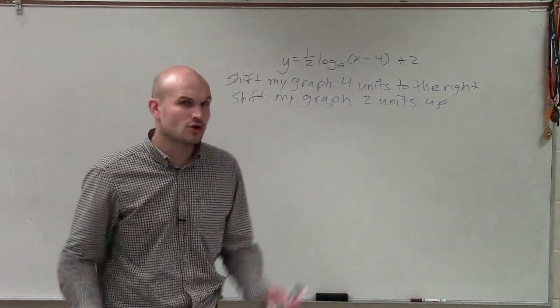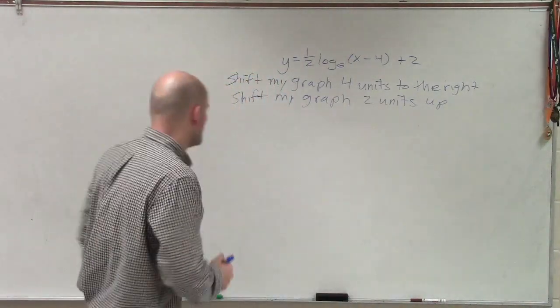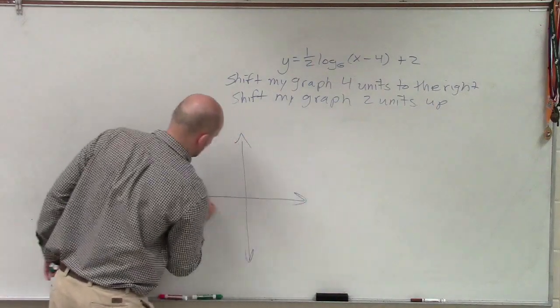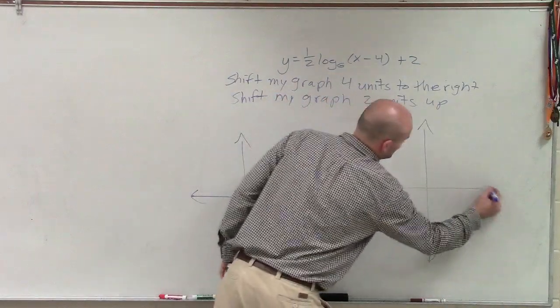And then the plus 2 is going to tell me to shift my graph two units up. So what I need to do is, what am I shifting four units to the right and two units up from? So to do that, we want to graph our parent function. And we also then here is going to be our final graph.